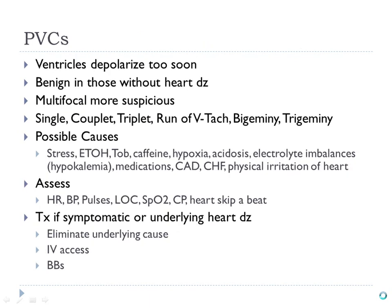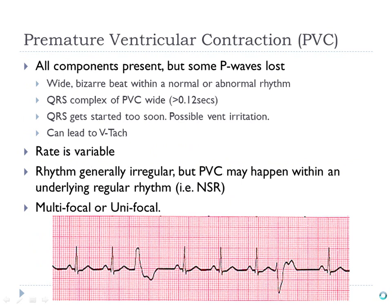What makes it a PVC is that it's a wide QRS. Sometimes you'll have a rhythm with consistently wide QRS complexes, but a PVC is thrown into an underlying rhythm — the underlying rhythm looks like normal sinus rhythm. If you consistently have wide QRS complexes, you wouldn't necessarily call those PVCs — the patient might actually be in VTAC.